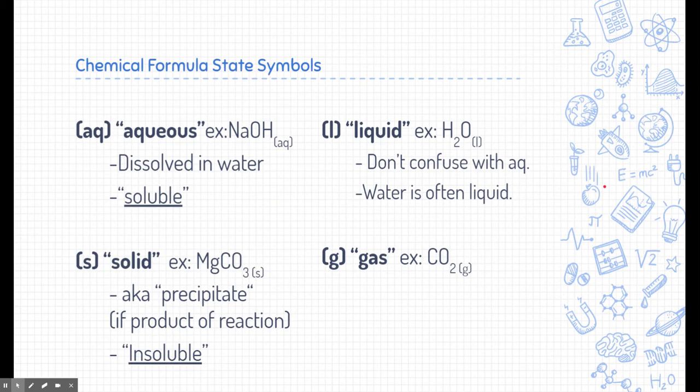All right we're going to talk about what happens when we mix these but we need to know some state symbols. These state symbols appear in chemical formulas to tell you the different states that substances are in. The first state symbol is AQ. We have sodium hydroxide NaOH and there's a little state symbol next to it AQ. That means that this substance is aqueous. In other words it's dissolved in water or it's soluble. Now on the other hand you might see something like MgCO3 magnesium carbonate and it has a little state symbol S. That represents a solid. Another name for an S is a precipitate and that's only if it's a product of a reaction. A precipitate is an undissolved solid and we would say that things that are S are typically insoluble.